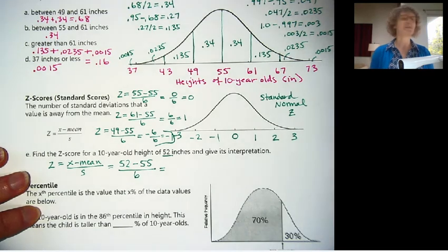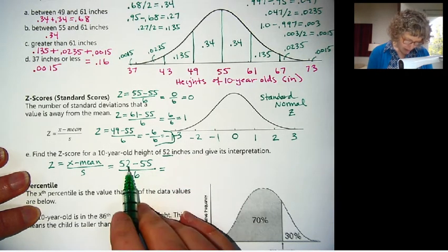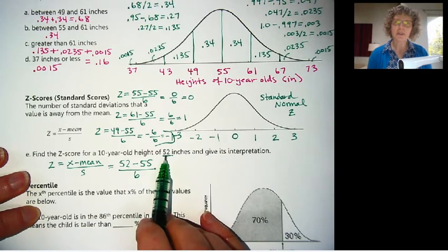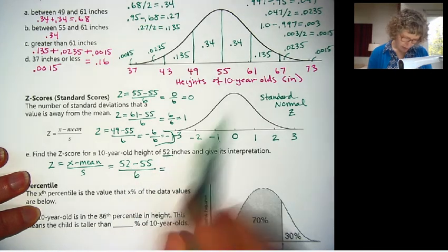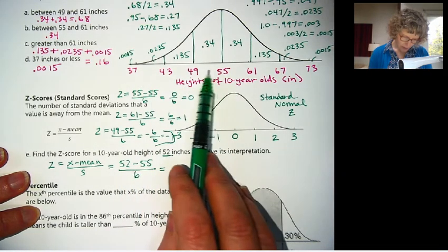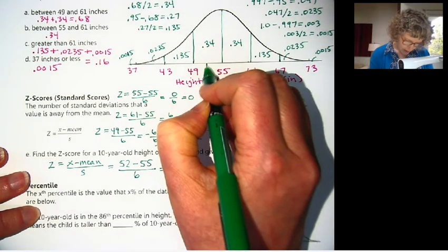So we get a negative z-score if we're to the left of the mean. This will be negative 2, and I ran a little bit over into my space there. That is negative 3, where 37 is 3 standard deviations below the mean. So when you hear a z-score, that tells you how far someone is away from the mean. It also tells you whether they're above average or below average, because to the right is going to be a positive z-score, and to the left is going to be a negative z-score.